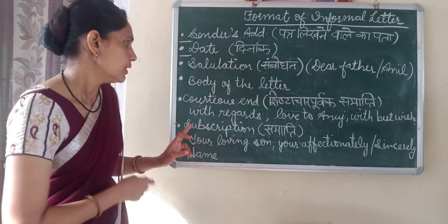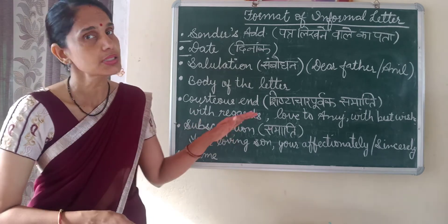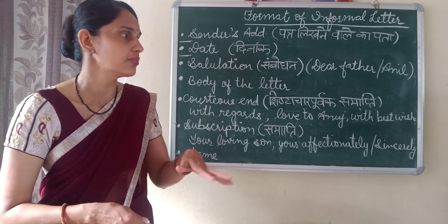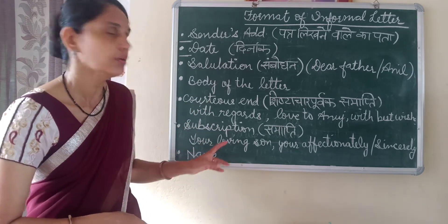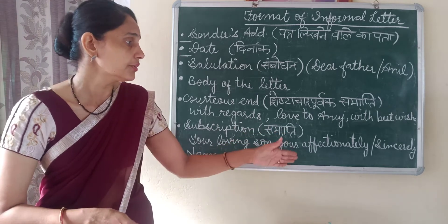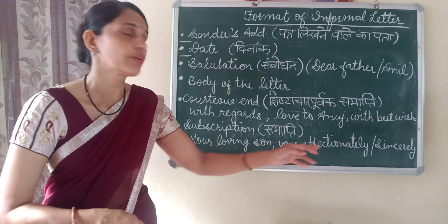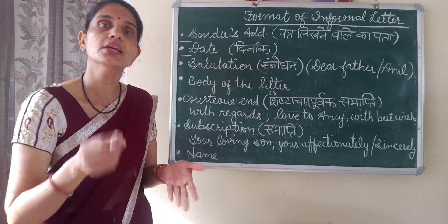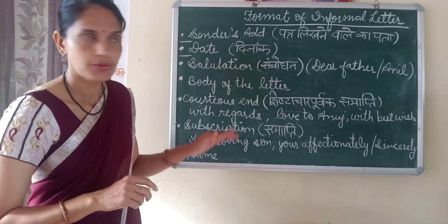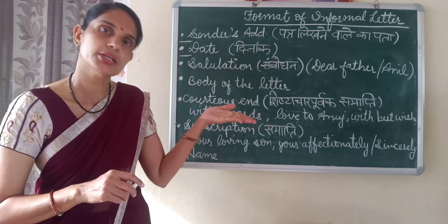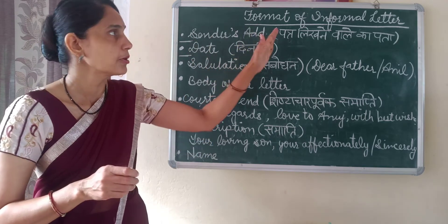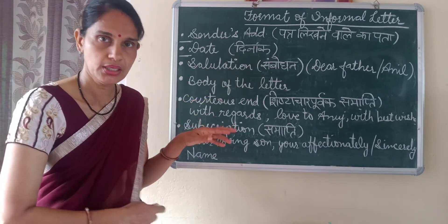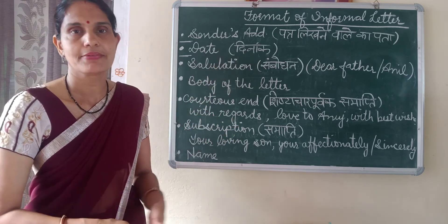The next line is our subscription. Subscription means: your loving friend, your sincerely, your loving son, or your affectionately. After the subscription, we write our name. This is the complete format of an informal letter. Now you can see the difference between the format of a formal letter and an informal letter. I hope all of you got the format of informal letter — please revise the topic.